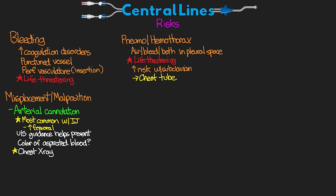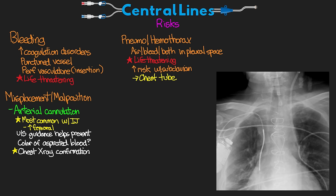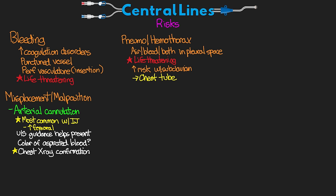The gold standard is to get a chest X-ray to confirm placement as well as to check for other potential complications. Here I'll put up an example to show you what you're looking for. We have a central line that is inserted properly — as you can see it comes down to the SVC on the patient's right side. If we had an arterial cannulation, one of the telltale giveaways is which side of the patient you see the line going. In this example you can see the line going across and down on the patient's left side, which would be an indication that it's going in the artery down towards the aorta.